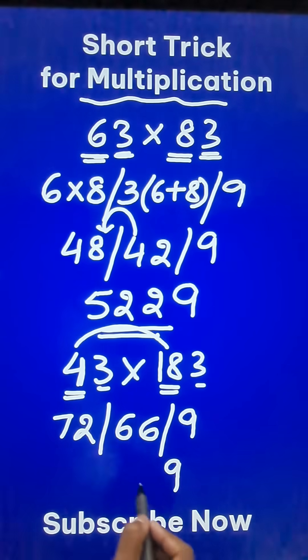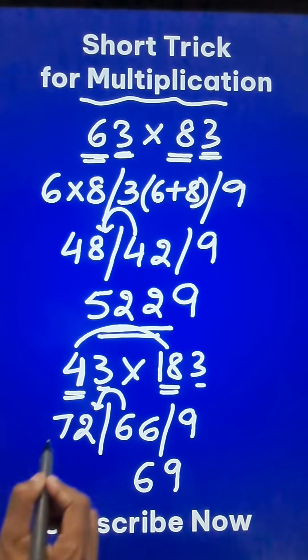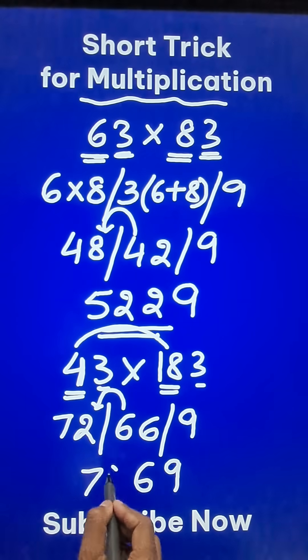So retain the 9 here. 66 means 6, and the 6 gets added to 72 giving you 78. So 7869 is your product.